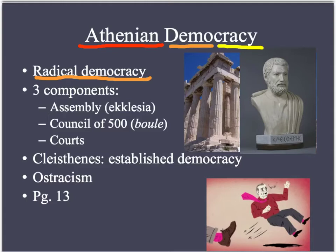The man basically credited with implementing the style of democracy we're familiar with is Cleisthenes. They also had a system called ostracism — you may have heard the term 'ostracize.' Ostracize means to exclude somebody, and ostracism was a political way to do this. If the Ekklesia wanted to, they could choose to ostracize somebody once a year. People would carve a name into broken pieces of pottery called ostraca, and if somebody had enough votes, they would be kicked out of the city for ten years — with ten days to leave. If they tried to come back early, they would have been killed.